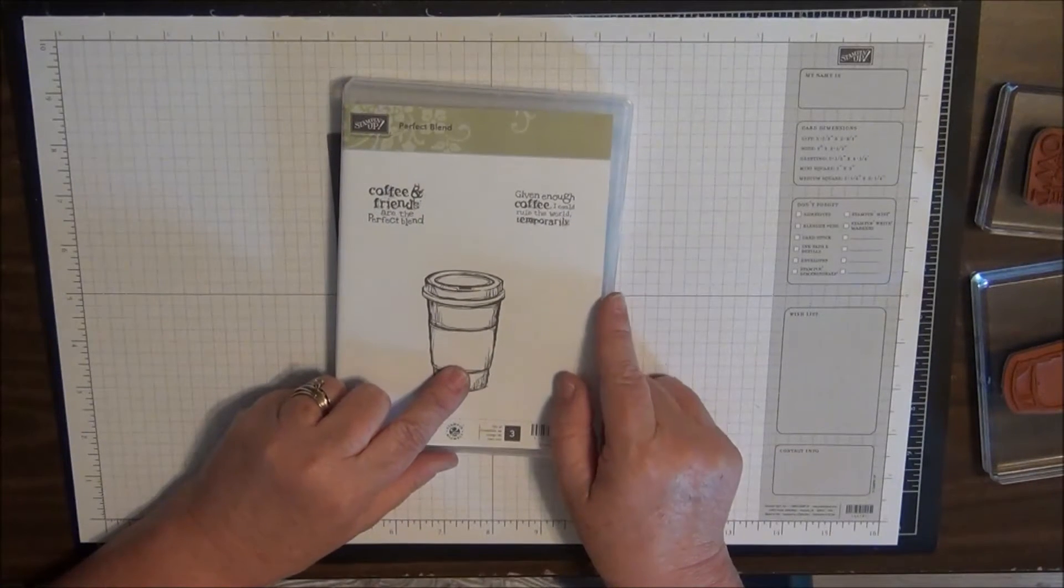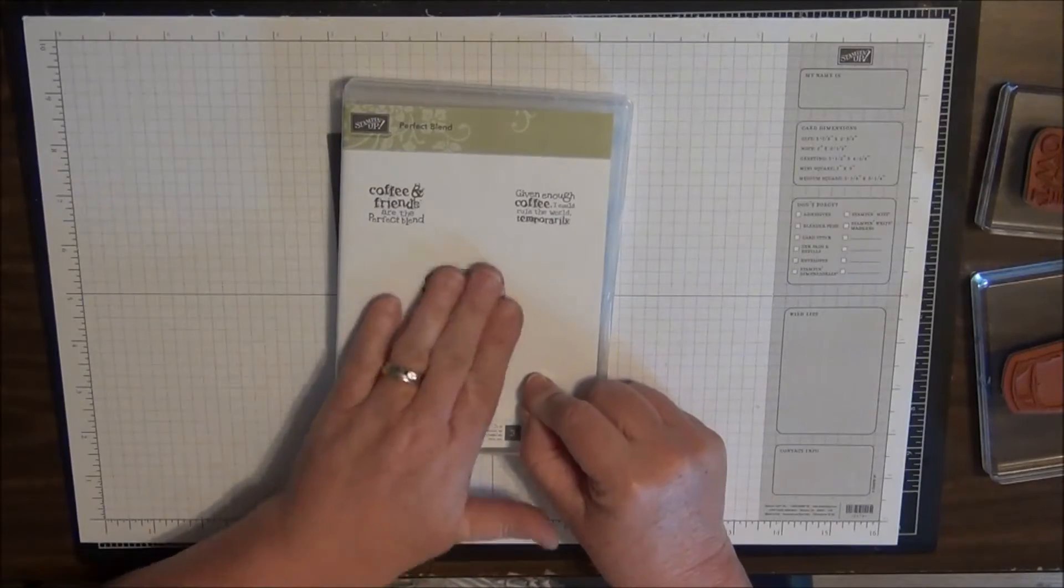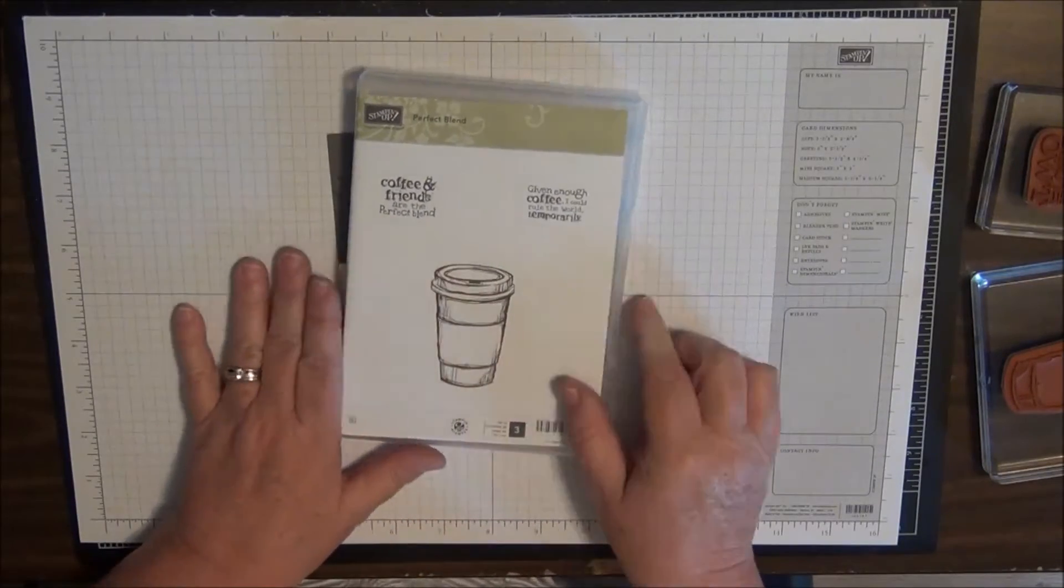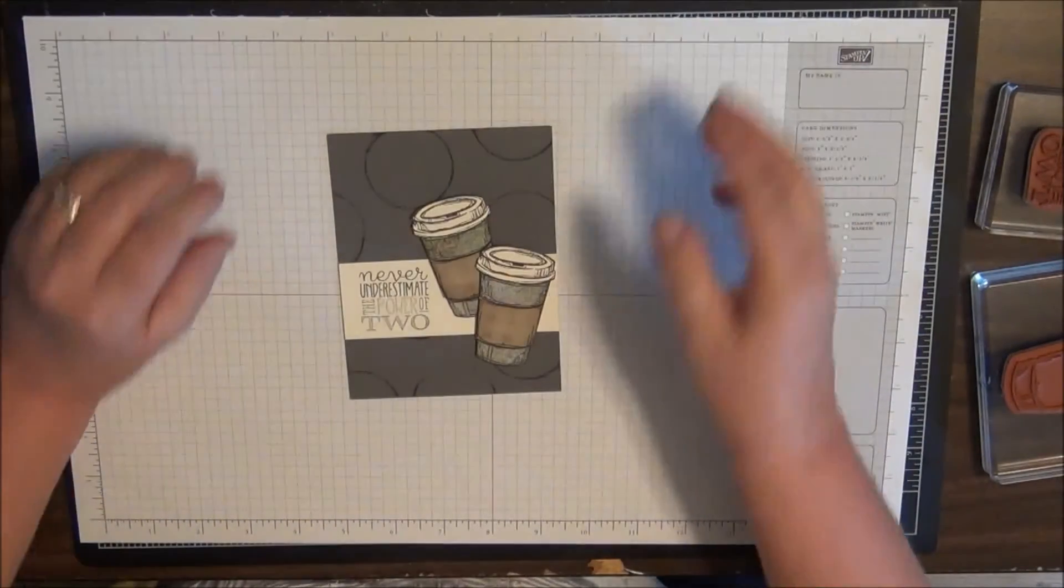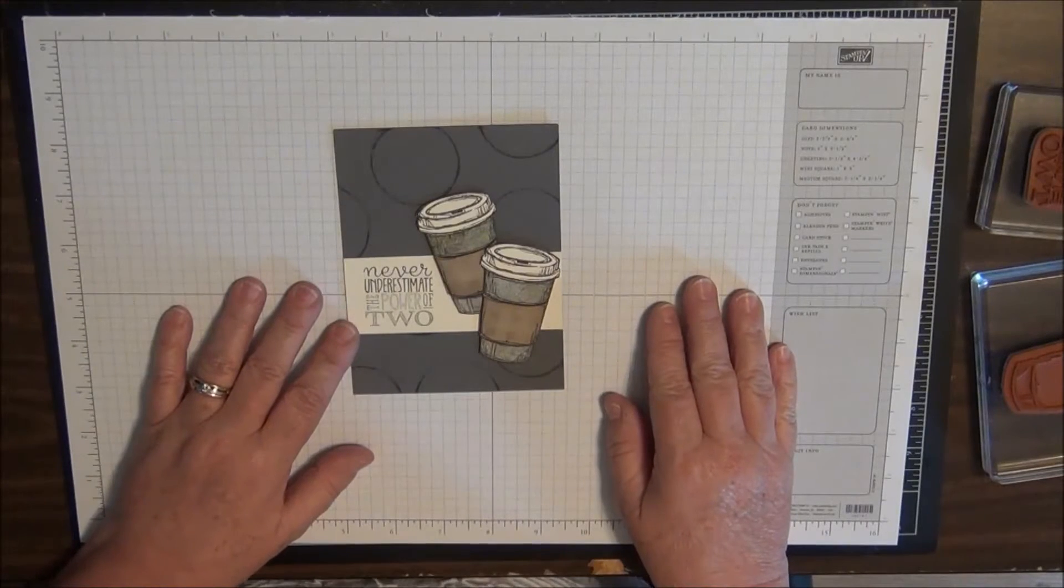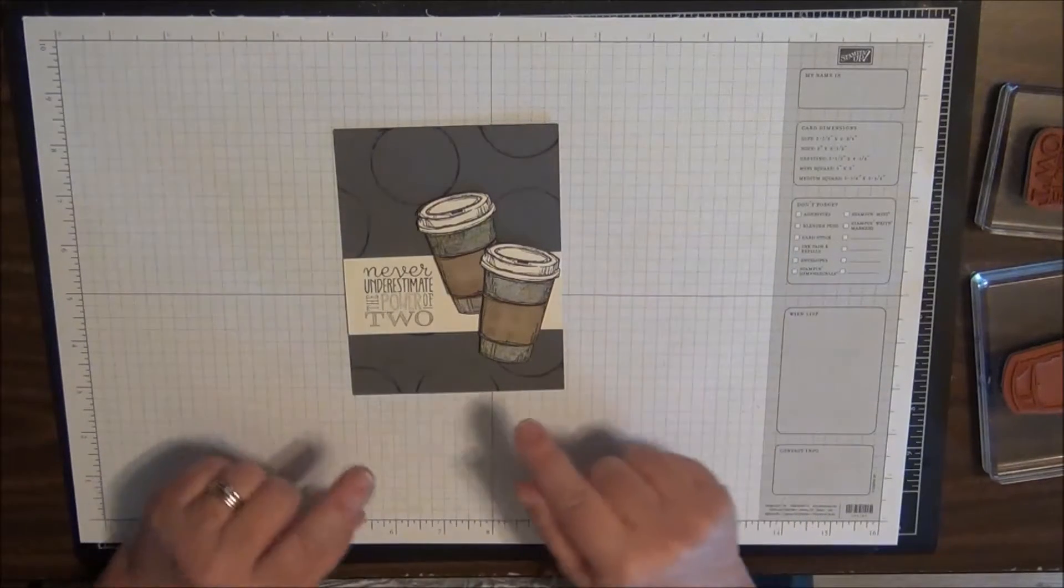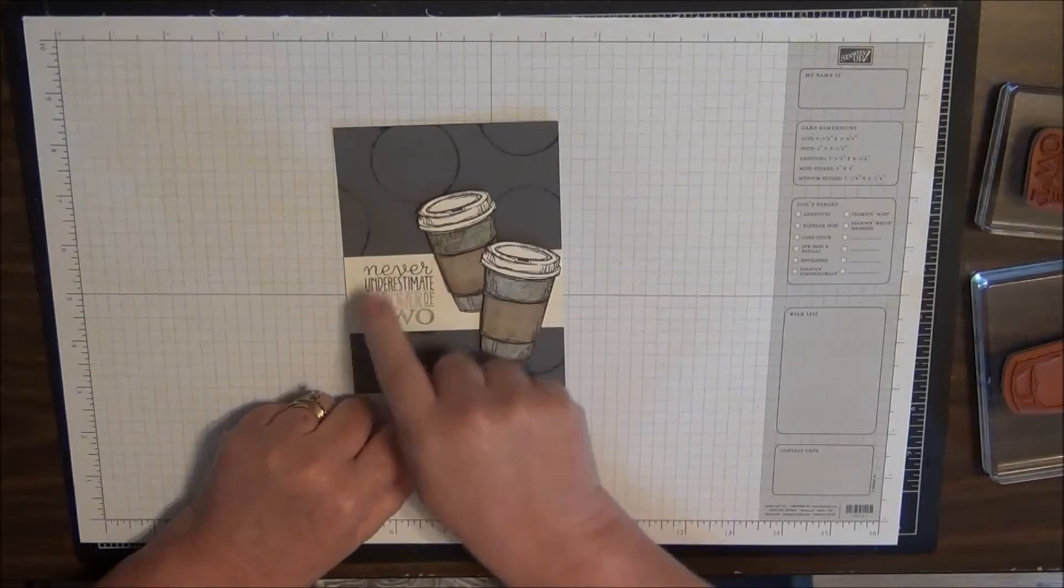This little coffee cup - I do not drink coffee but this little coffee cup and I have bonded. It was just so much fun. I think my stamp club members knew that when they came to class they were definitely going to do something with the Perfect Blend. So this is the card that we made.